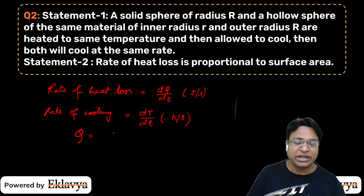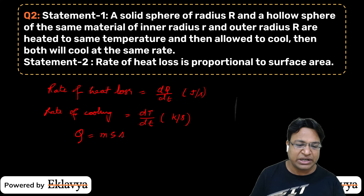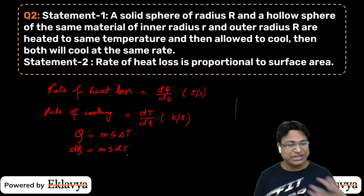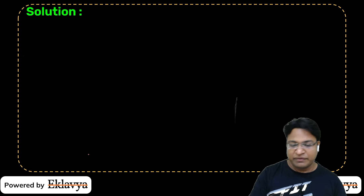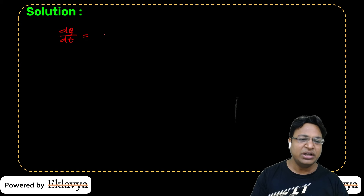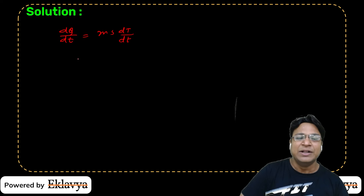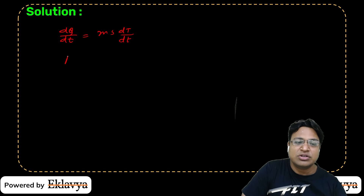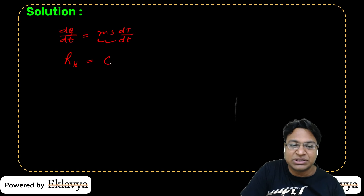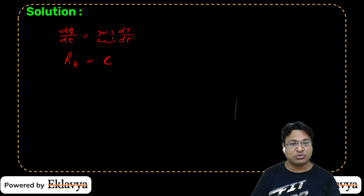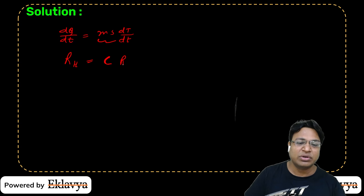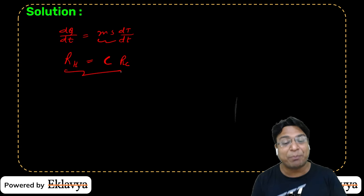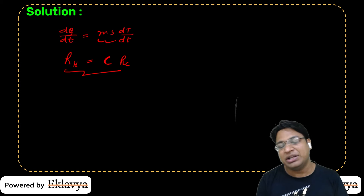When we give an object heat Q, the temperature increases. We write Q = MsΔT. We can write DQ = Ms·DT, so DQ/Dt = Ms × DT/Dt. The rate of heat loss R_H equals mass × specific heat capacity × rate of cooling. These two are proportional but not equal — the constant (heat capacity) can be different.